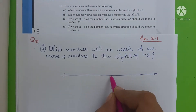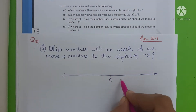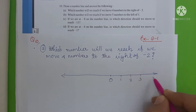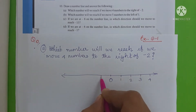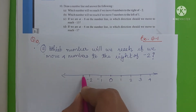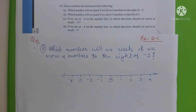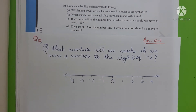On the number line, we plot 0, then 1, 2, 3, 4 on the right side, and minus 1, minus 2, minus 3, minus 4 on the left side. This is enough for this question.